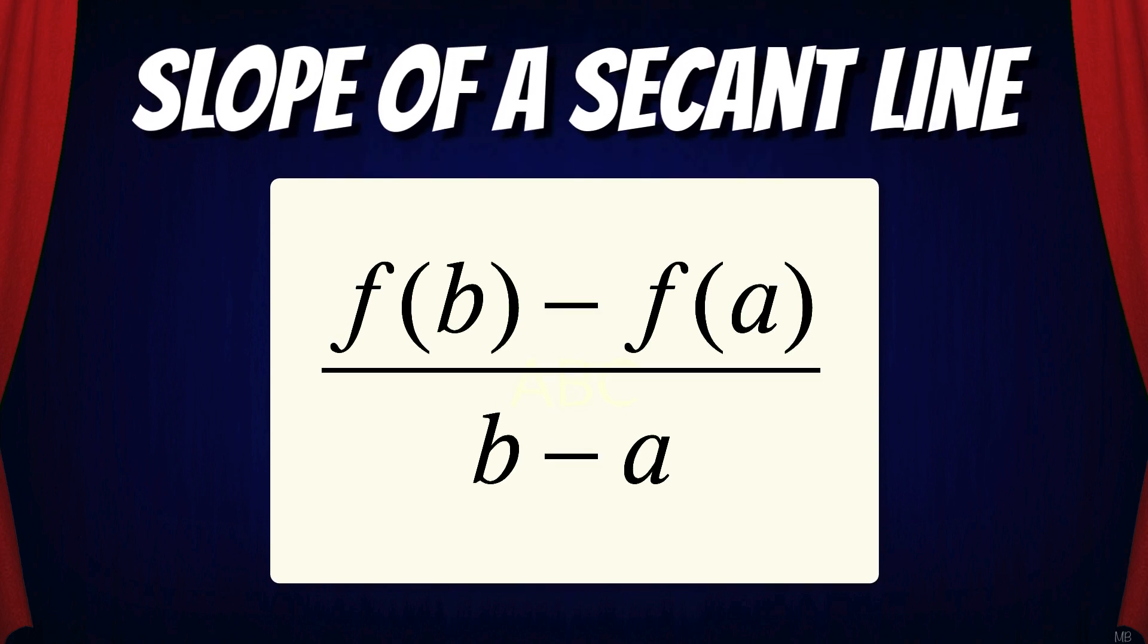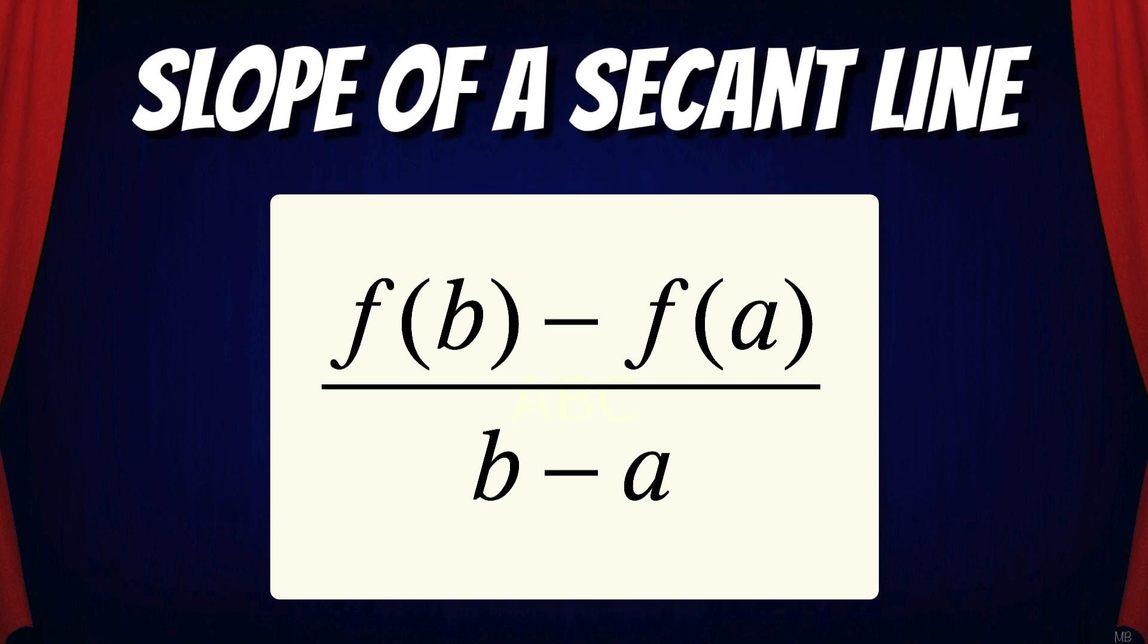Now in order to find the slope of a secant line on an interval [a, b], we need to find the change in y over the change in x. This corresponds to [f(b) - f(a)] / (b - a).